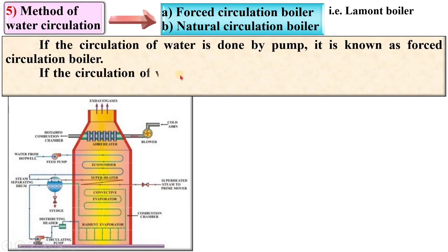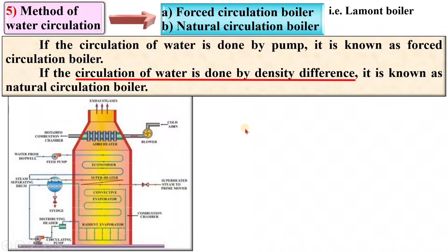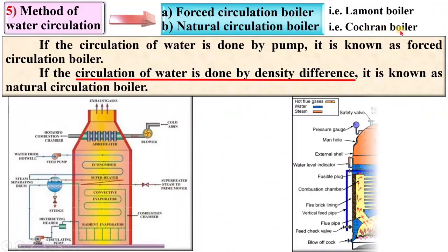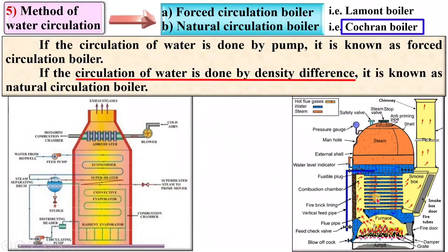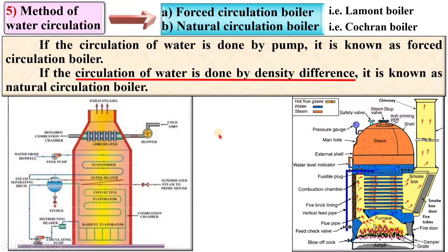If the circulation of water is done by density difference, it is known as a natural circulation boiler. Here the circulation of water in the boiler drum happens naturally by density difference, and that is why it is called a natural circulation boiler.